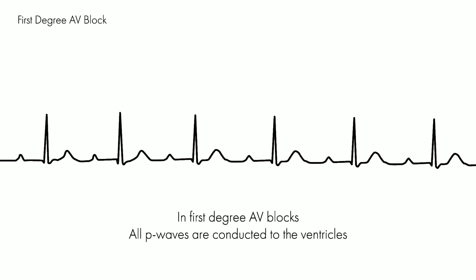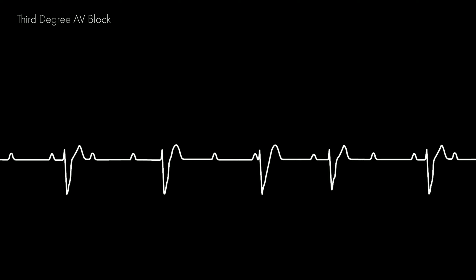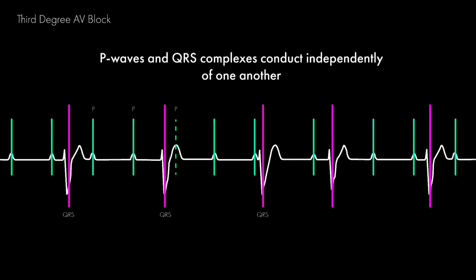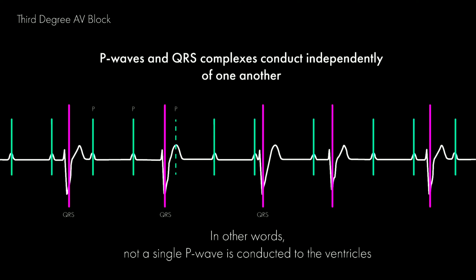In first degree AV block, all P waves are conducted to the ventricles. In third degree AV block, P waves and QRS complexes conduct independently of one another — in other words, not a single P wave is conducted to the ventricles.